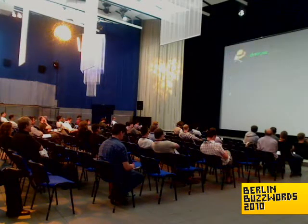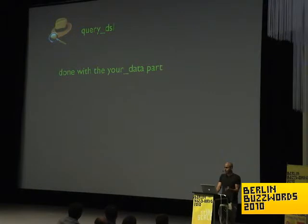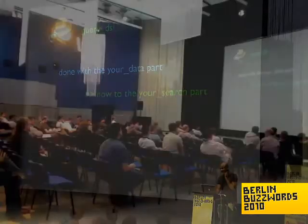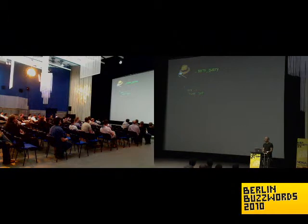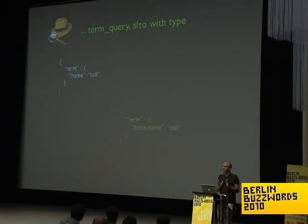Let's talk about the query DSL itself. We saw how we can index the data — very easy HTTP requests, JSON data, automatically identified fields. Elasticsearch provides a query DSL inspired by Lucene queries. For example, this is how a term query looks like. You can specify the type: search for all terms where a book's name has the term 'call' within it. Results are automatically filtered to typed 'book'.